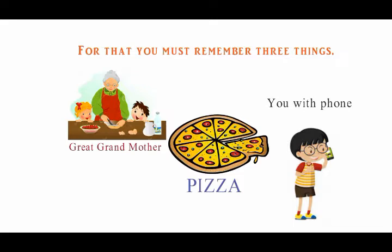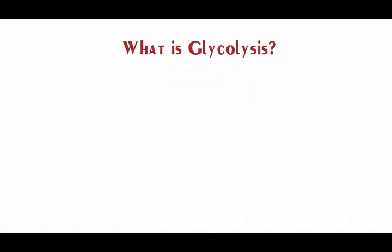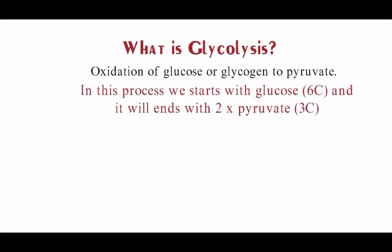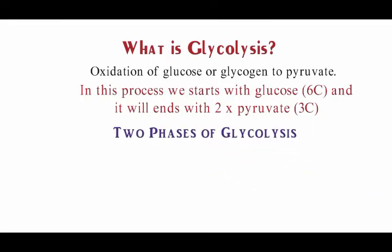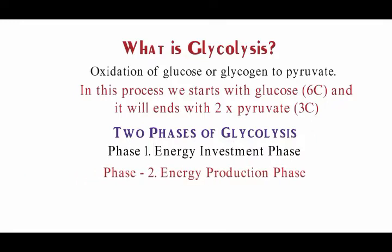What is glycolysis? Oxidation of glucose or glycogen to pyruvate is known as glycolysis. In this process, we start with a glucose molecule which has six carbon atoms, and it is converted into two molecules of pyruvate — each pyruvate molecule has three carbon atoms. There are two phases of glycolysis: phase one, the energy investment phase, and phase two, the energy production phase. Each phase has five products.